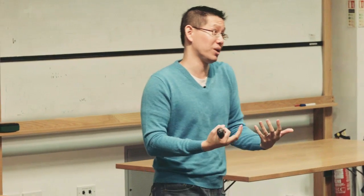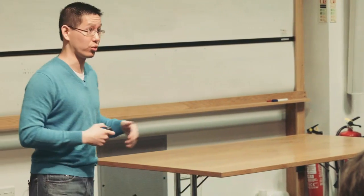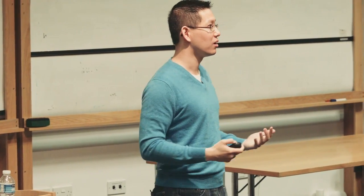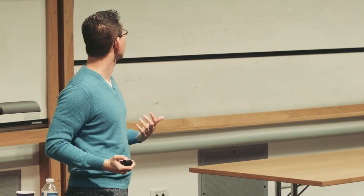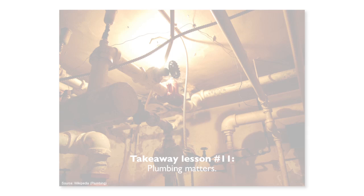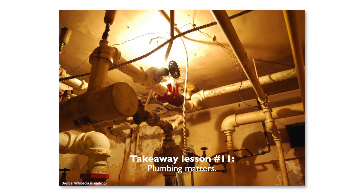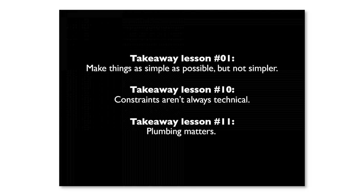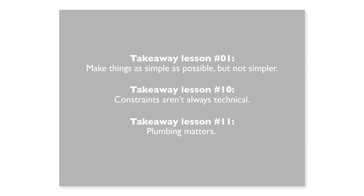This really wasn't the case during my time at Twitter because we were building this infrastructure too. We had a lot of teething pains trying to sort through all these issues. And this infrastructure is what I call plumbing — plumbing is critical to getting things done. So that's the third takeaway lesson: plumbing matters. As a summary, the three takeaway lessons are: make things as simple as possible but no simpler; constraints aren't always technical; and the importance of doing good plumbing.